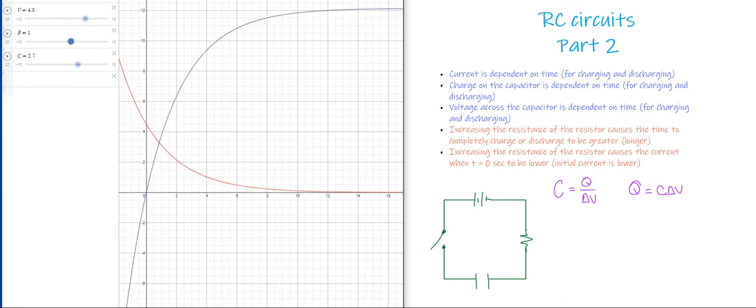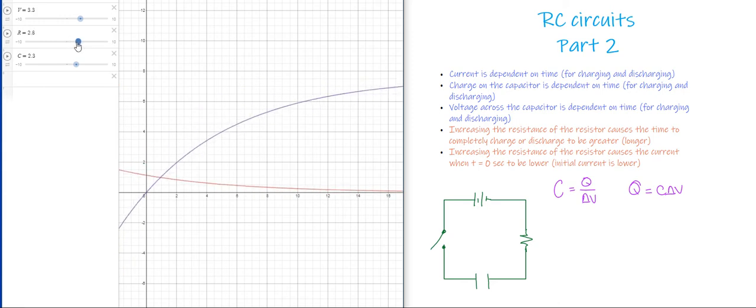You can see that over there. And then for the charge or the voltage, which should have basically the same shape that I see in this kind of purple or blue graph, the capacitance is changing the maximum value that we can reach for charge. And the resistance is changing, not necessarily the maximum value we can reach, but the time that it takes to reach that maximum value. So, some very interesting things here.